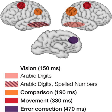Shepard and Metzler presented a pair of three-dimensional shapes that were identical or mirror image versions of one another. Reaction time to determine whether they were identical or not was a linear function of the angular difference between their orientation, whether in the picture plane or in depth. They concluded that the observers performed a constant rate mental rotation to align the two objects so they could be compared.